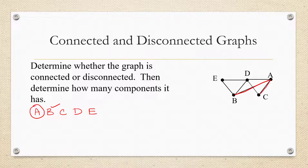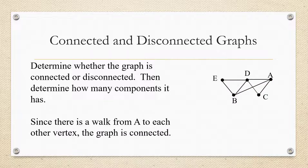From A I can get to C, so we're good there. From A I can get to D, so we're good there. And from A I can get to E — it doesn't have to be just one edge, so I can go from A to D and then to E. I can still get to E without going off the graph. Since there's a walk from A to each other vertex, this graph is in fact connected.